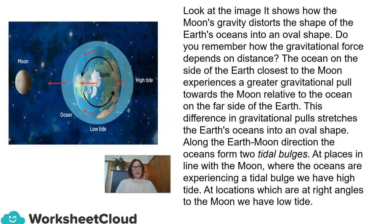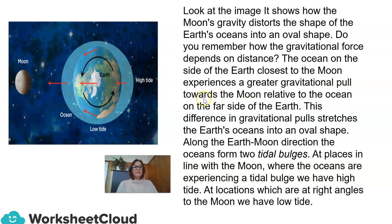Let's take a look at the image. It shows how the Moon's gravity distorts the shape of the Earth's oceans into an oval shape. Remember how gravitational force depends on distance? The ocean on the side of the Earth closest to the Moon experiences a greater gravitational pull towards the Moon relative to the ocean on the far side. This difference in gravitational pulls stretches the Earth's oceans into an oval shape. Along the Earth-Moon direction, the oceans form two tidal bulges. At places in line with the Moon where the oceans are experiencing a tidal bulge, we have high tide. At locations which are at right angles to the Moon, we have low tide.